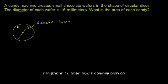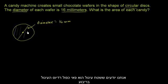And they want us to figure out the area, the area of the surface of this candy, or essentially the area of this circle. And so when we think about area, we know that the area of a circle is equal to π times the radius of the circle squared.